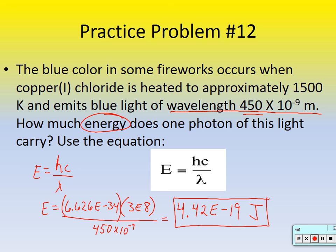Wave calculations — can we do those? I will always give you those equations. C equals 3 times 10 to the 8th meters per second. H is Planck's constant, and I'll always give that to you. You now know enough to do a worksheet in your student workbook — it's called 'Wavelength, Frequency, and Energy of Waves' — complete that one. Hopefully this helps.